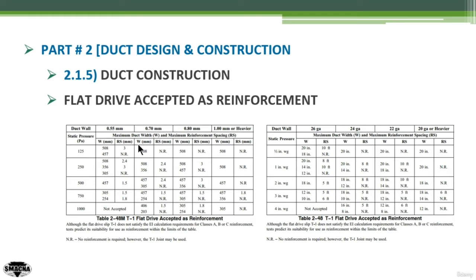Each of these thickness values has two sub-values below it: W in mm and RS in mm. W is the maximum duct width and RS is the maximum reinforcement spacing. So for each value of the static pressure at a certain duct wall thickness, you will have the maximum allowable duct width and the maximum reinforcement spacing.